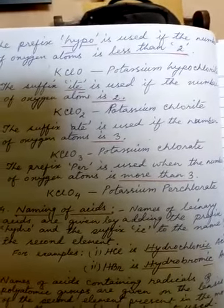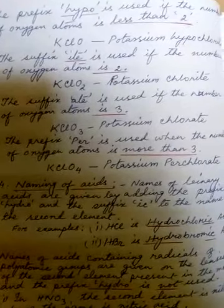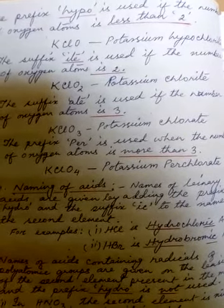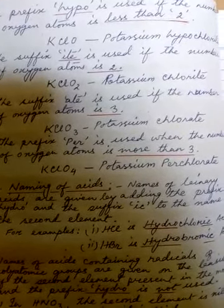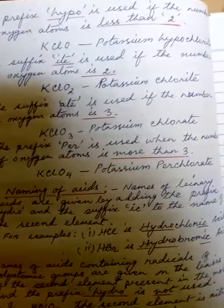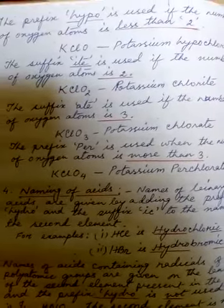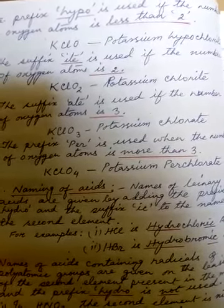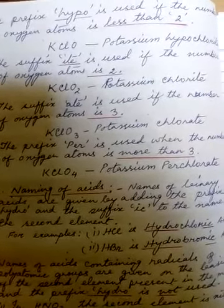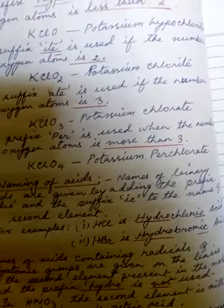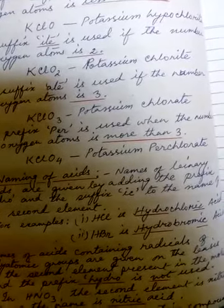For naming binary acids — binary acids are made up of only two elements — 'hydro' is used for hydrogen, and 'ic' is added for the second element. For example, HCl is hydrochloric acid and HBr is hydrobromic acid.